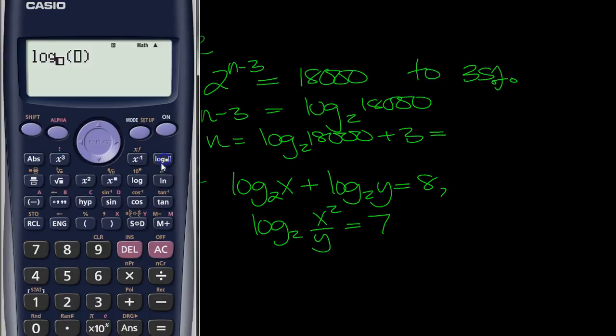So we've got log 2 of 18,000 plus 3, which is 17.1 to 3 significant figures.